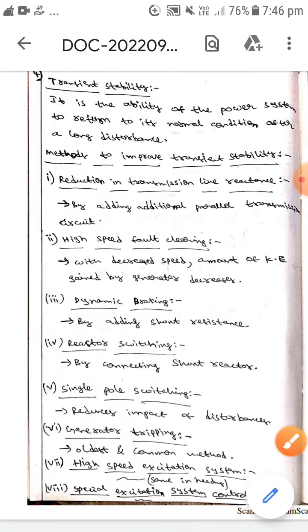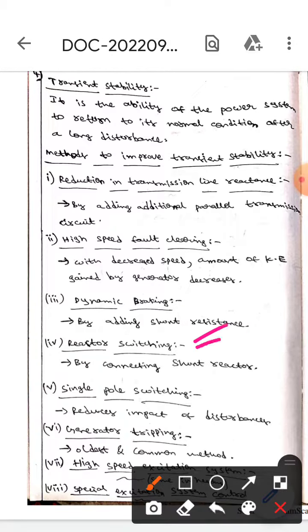transient stability. The next one is single pole switching. By single pole switching we can reduce the impact of disturbances, improving transient stability. The next one is generator tripping. It is the oldest